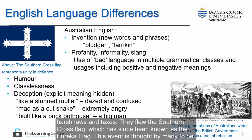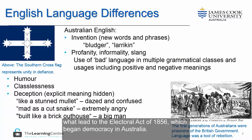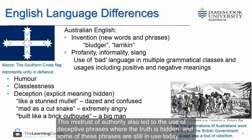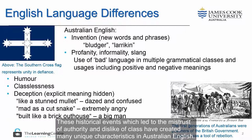The rebels flew the Southern Cross flag, which has since been known as the Eureka flag. This event is thought by many to be what led to the Electoral Act of 1856, which began democracy in Australia. This mistrust of authority also led to the use of deceptive phrases where the truth is hidden, and some of these phrases are still in use today. These historical events, which led to the mistrust of authority and dislike of class, have created many unique characteristics in Australian English.